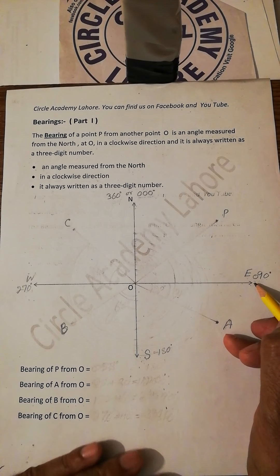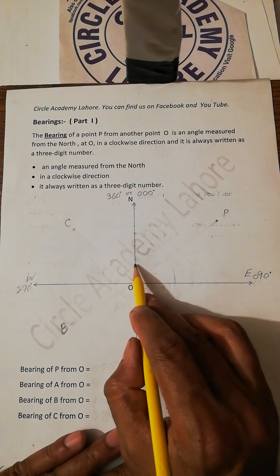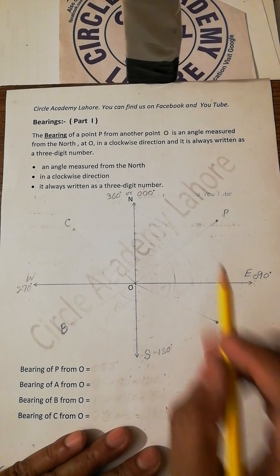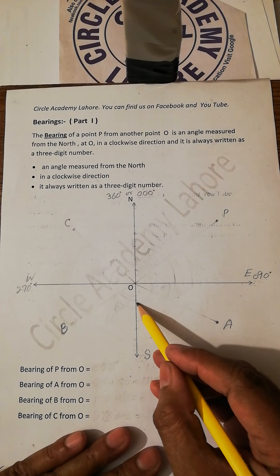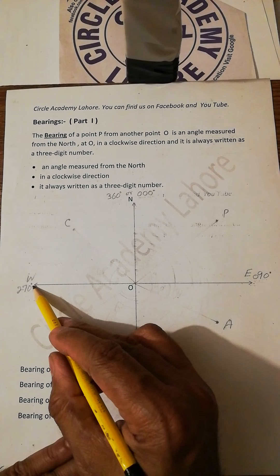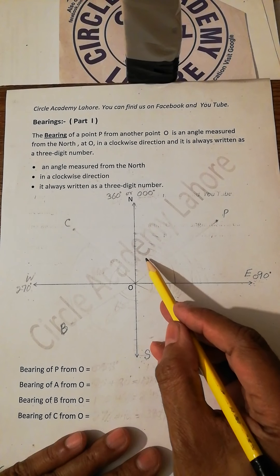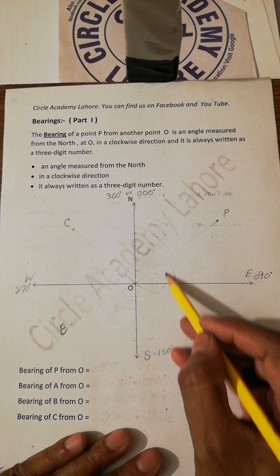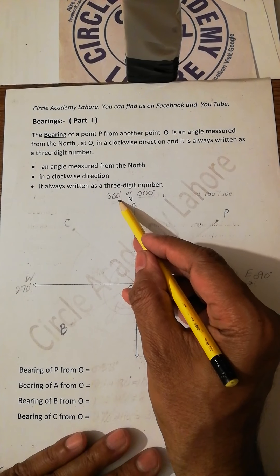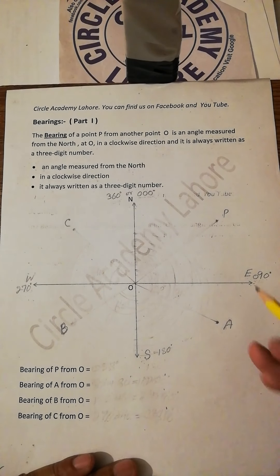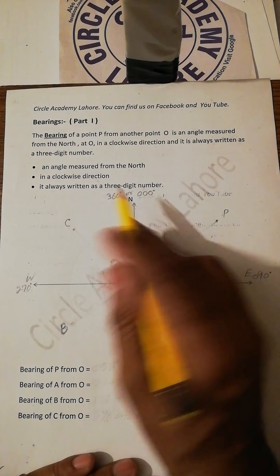The bearing of east from north is 90 degrees, the bearing of south from north is 180, and the bearing of west from north is 270. If we take the bearing of north from north — a complete rotation — that is 360 degrees. So the bearings of east, south, west and north have been covered.